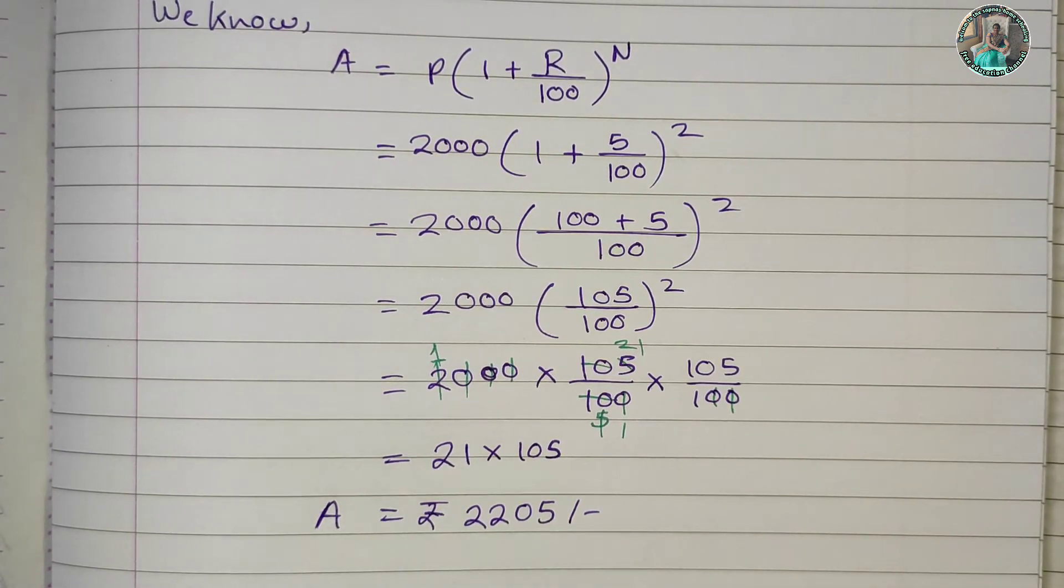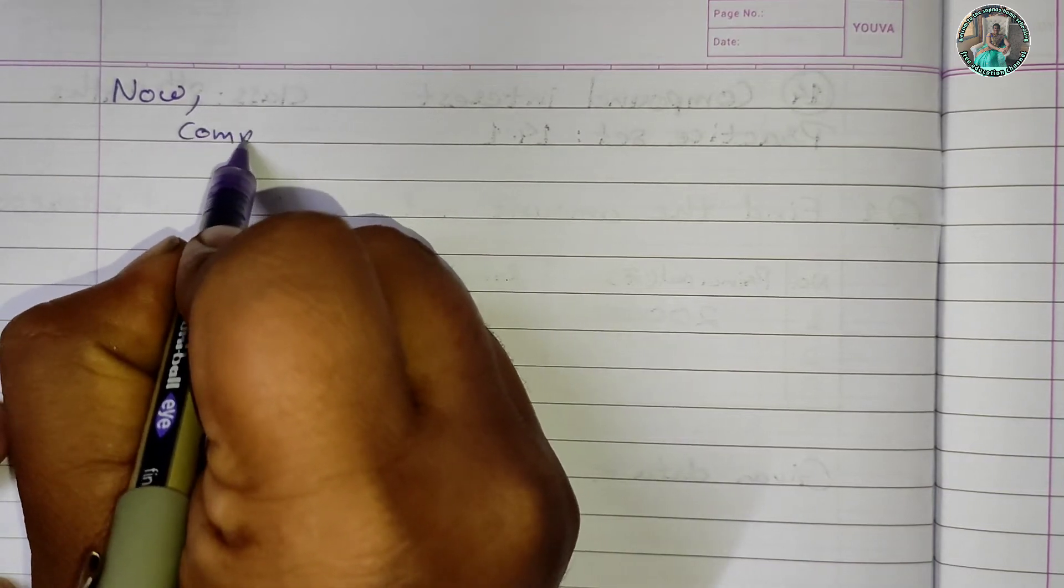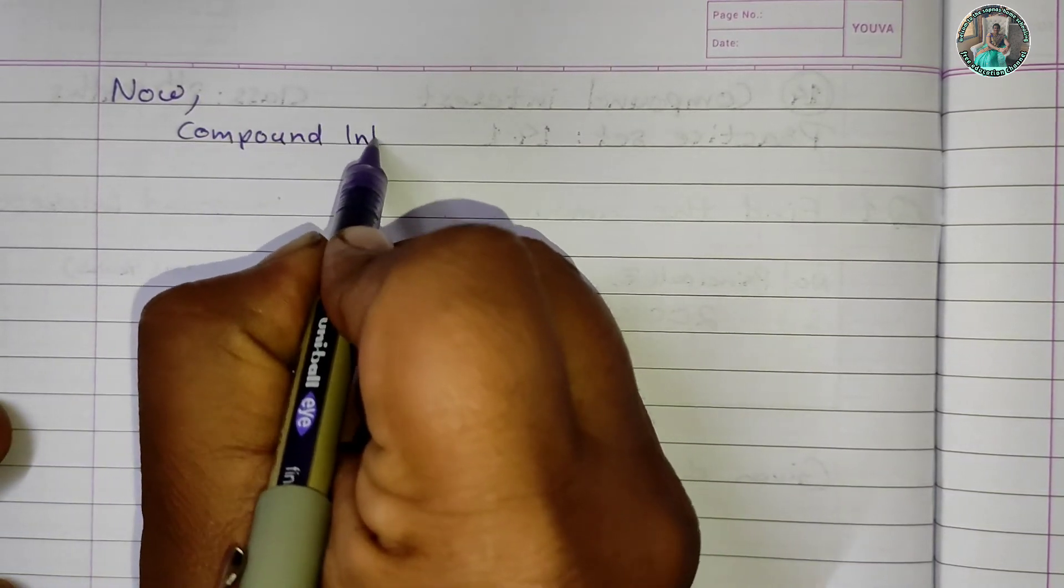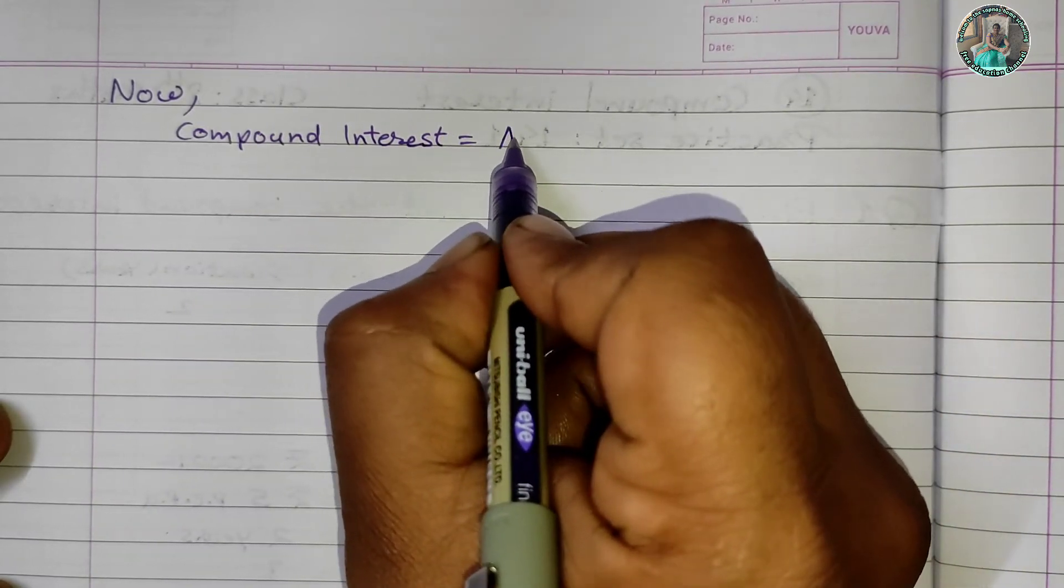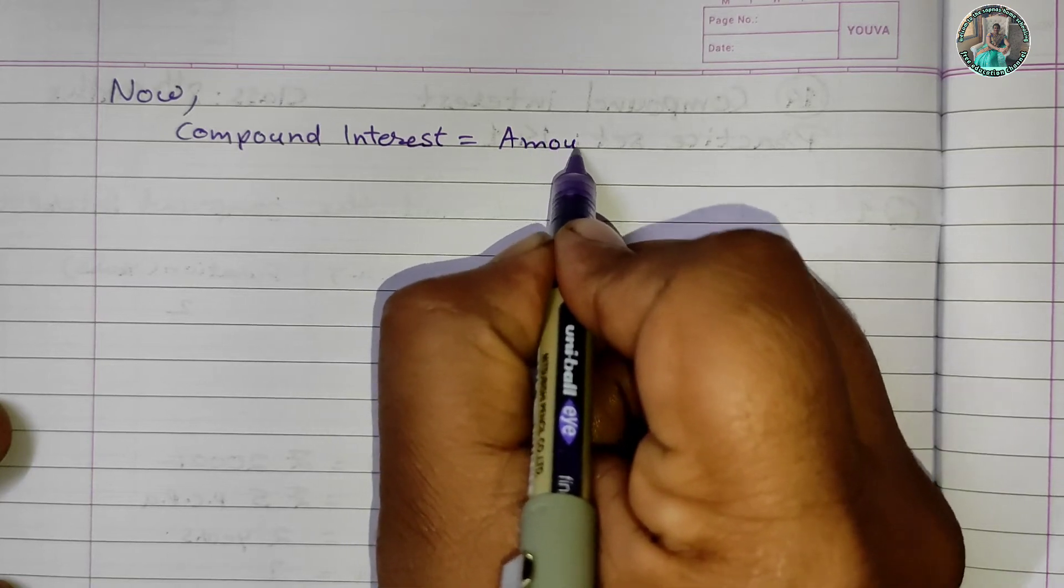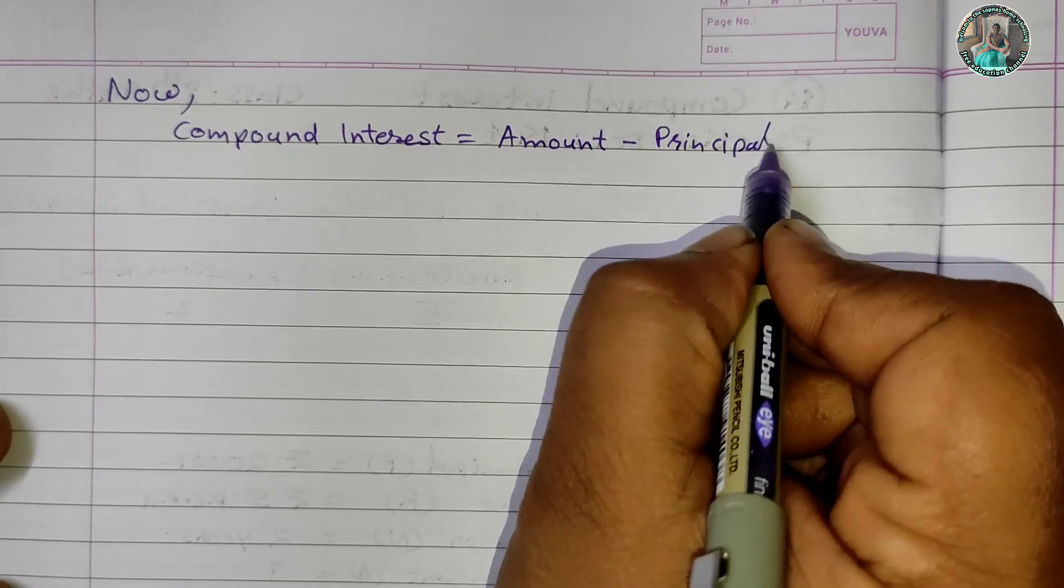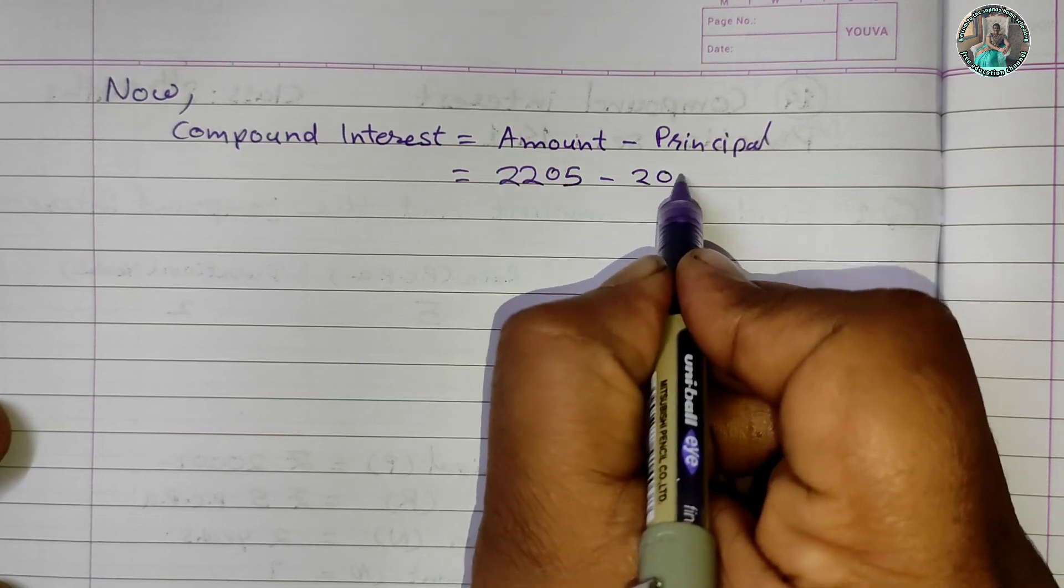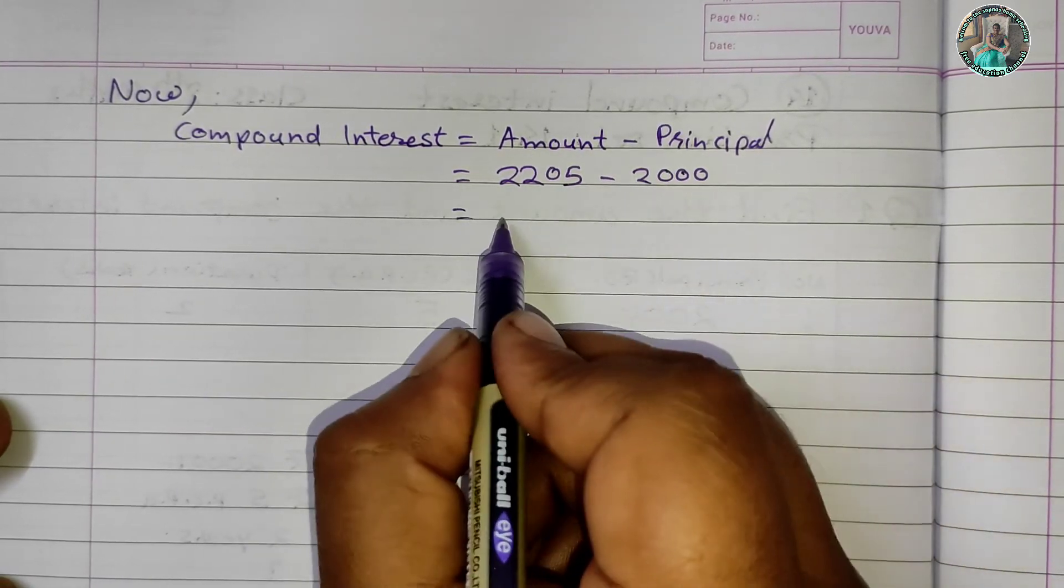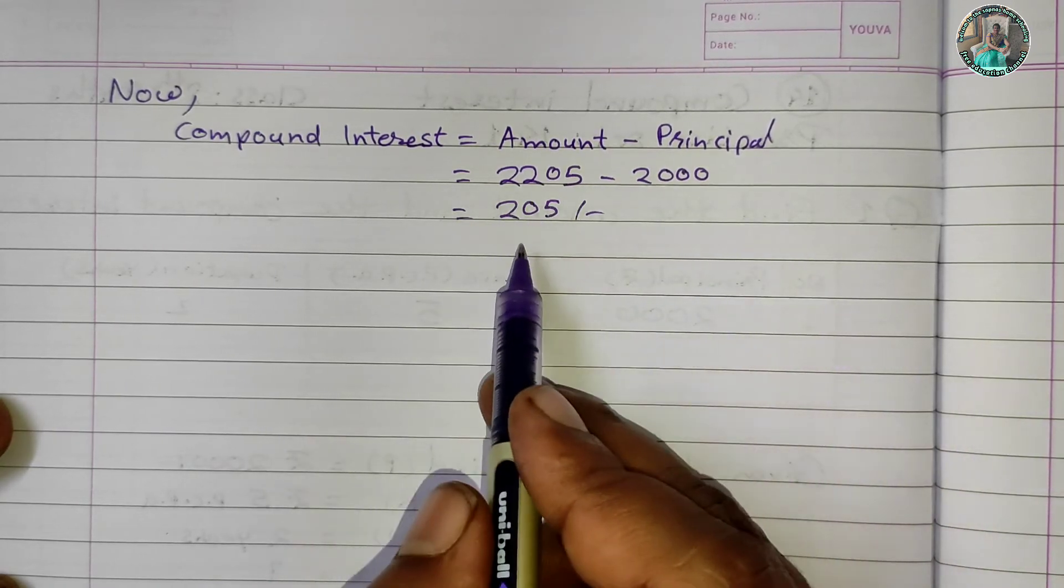Now to find the compound interest: Compound interest is equal to Amount minus Principal. This gives us 2205 minus 2000.